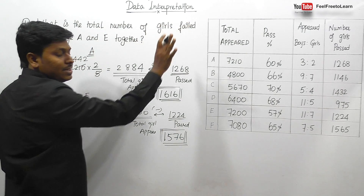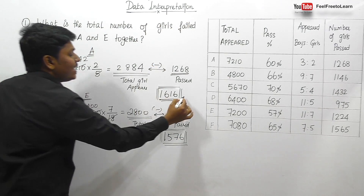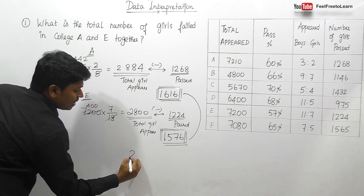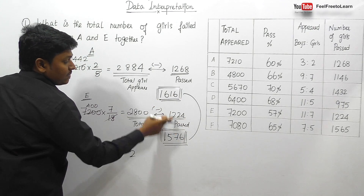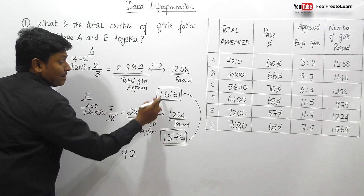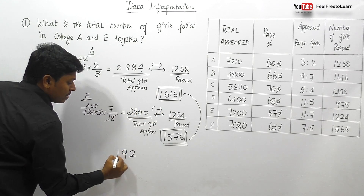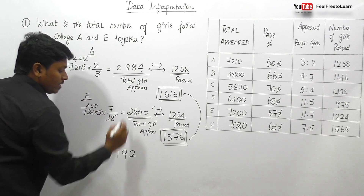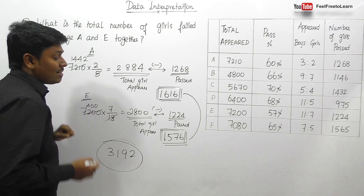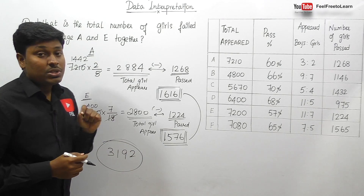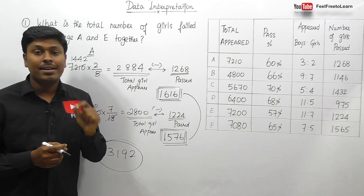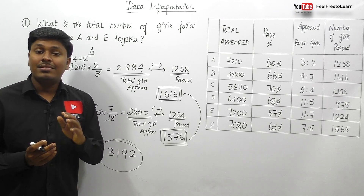Our target is to find the total number of girls failed in both colleges, so we add both values: 1616 plus 1576 = 3192. So 3192 is the total number of girls who failed in college A and college E together.